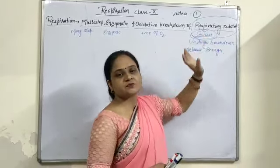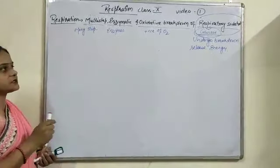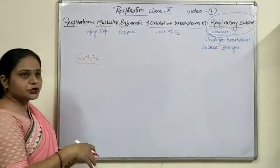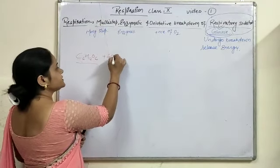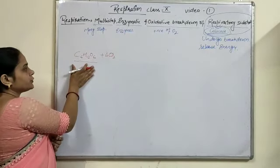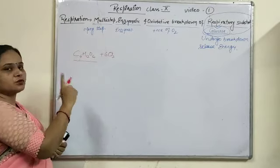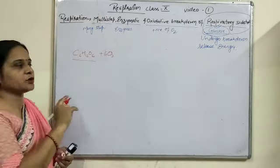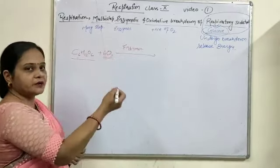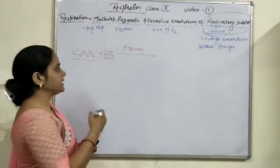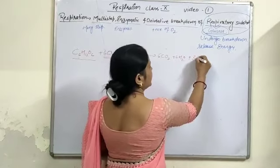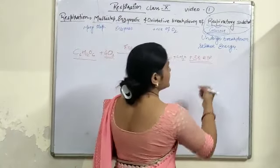We can take an example to show the equation. The main respiratory substrate is the glucose molecule. This glucose molecule needs oxygen for its complete breakdown. For one glucose molecule, there is a need for six oxygen molecules. In the presence of different enzymes, this oxygen burns the glucose completely, forming 6CO2 plus 6H2O plus 38 ATP — meaning a high amount of energy is released.